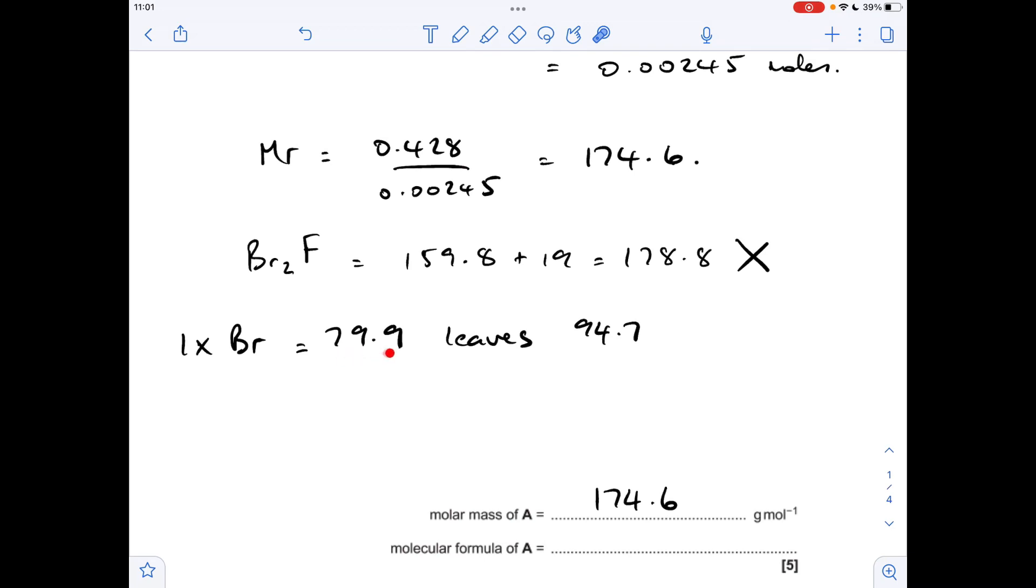So one bromine is obviously 79.9. So if we take that from the MR we've got 94.7 left. So if we divide that by the MR of 1 fluorine which is 19, we get approximately 5. It's 4.98 on the calculator. So the molecular formula of A must be BrF5.